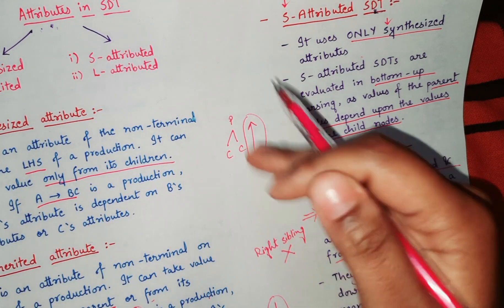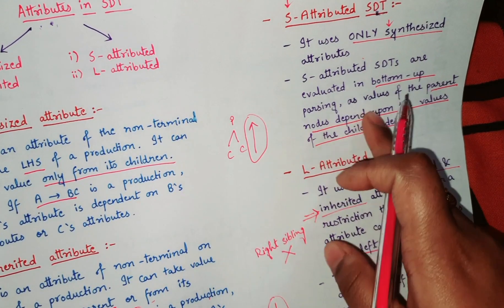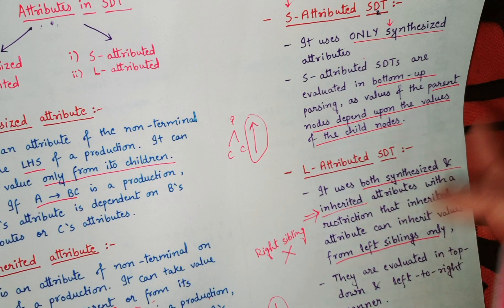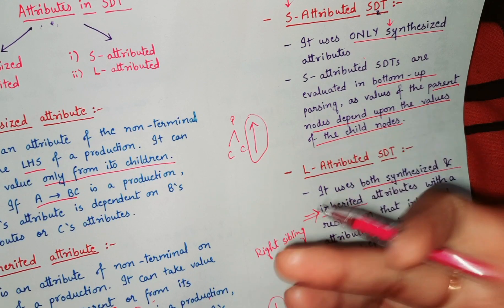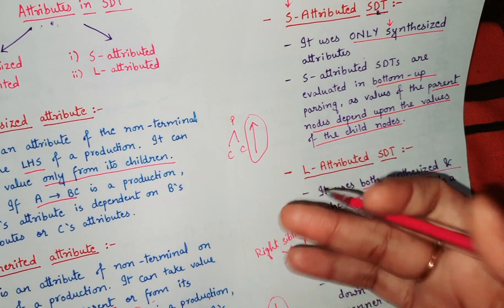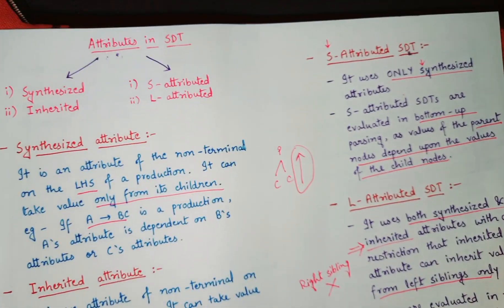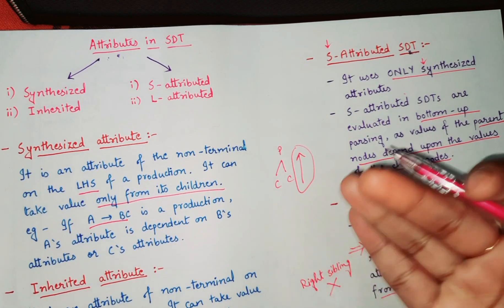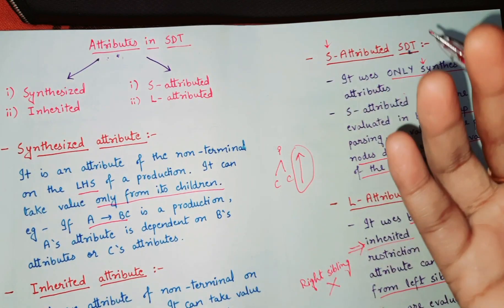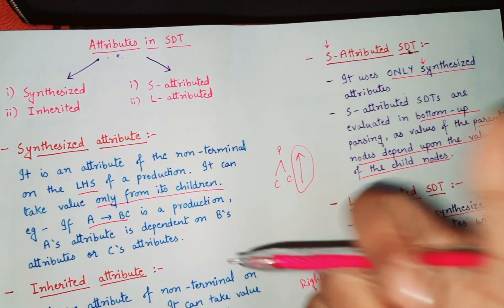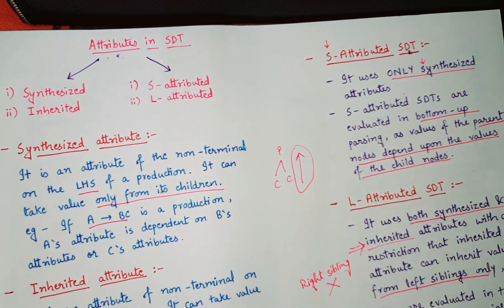So to summarize: S-attributed SDT uses only synthesized attributes and is evaluated bottom-up, while L-attributed SDT uses both synthesized and inherited attributes (with inherited limited to left siblings) and is evaluated top-down, left-to-right. These are small but important points that can be asked for two, three, or four marks, or in MCQs and fill-in-the-blanks. I hope it is clear — if there is any doubt, ask in the comment section. You can also visit our compiler design playlist for more SDT topics and examples.